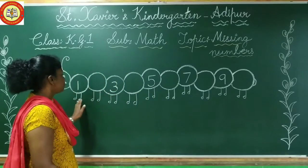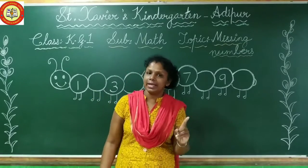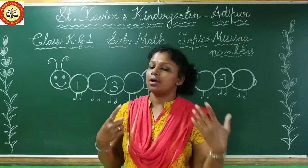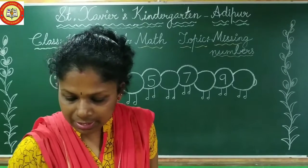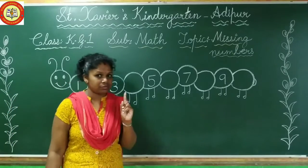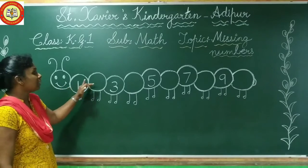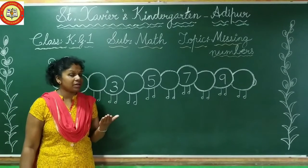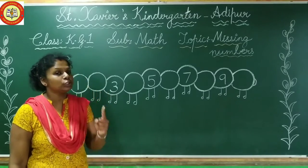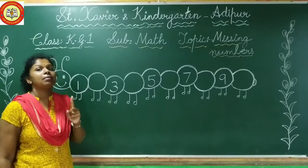Right? We will fill these missing numbers, okay? We have numbers one to ten. So we need to look carefully at the missing numbers. Number will start from one. Here number one is there — so which number will come after number one? Tell me children. Correct — number two. Two is missing here, so we have to write here number two.